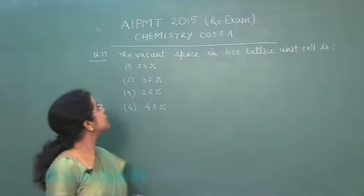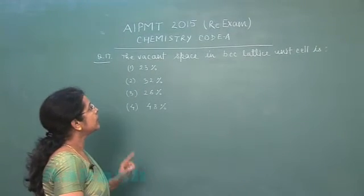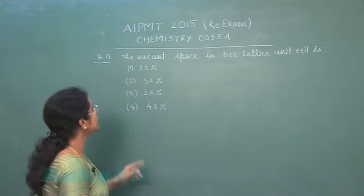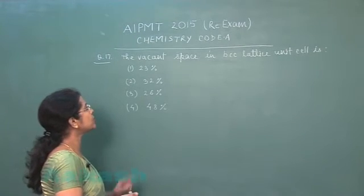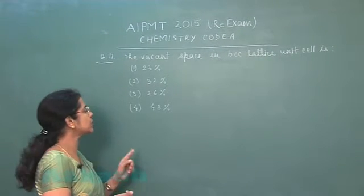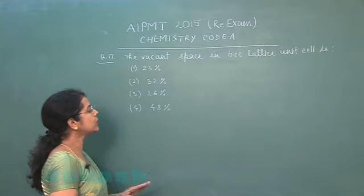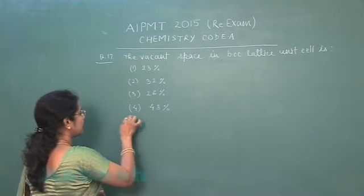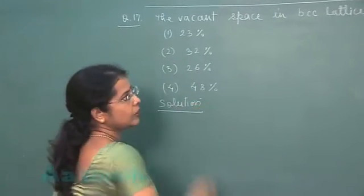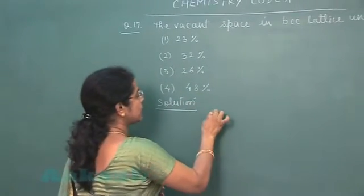Next question is question number 17. The vacant space in BCC lattice unit cell is: first option 23%, second option 32%, third option 26%, and fourth option is 48%. The percent vacant space